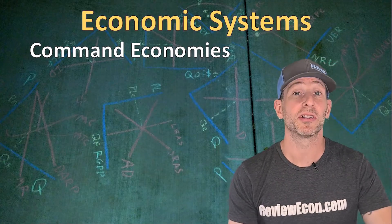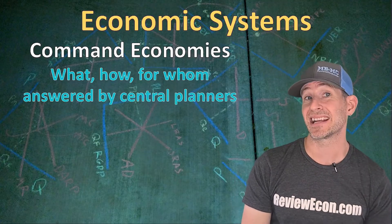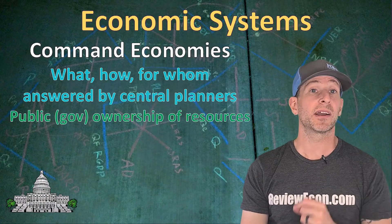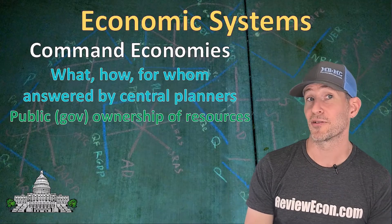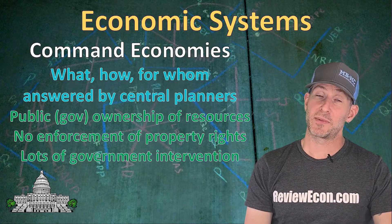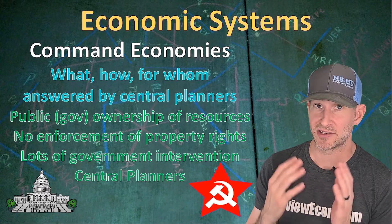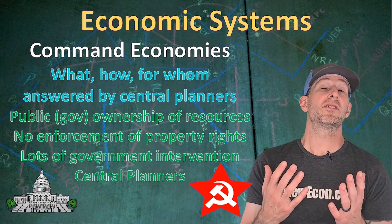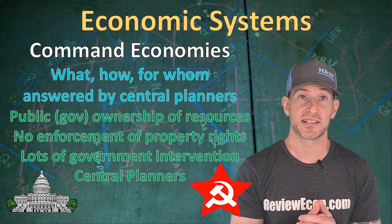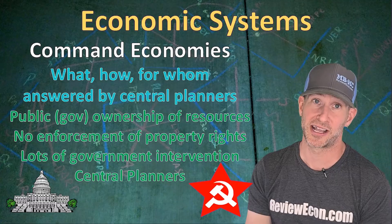The third pure economic system is called a command economy. In a command economy, what gets made, how it gets made, and who gets what is determined by central planners — government officials driving the economy. In a command economy, we have public or government ownership of resources, no enforcement of private property rights, and lots of government intervention. The former Soviet Union was a command economy. Even in the United States, we have some aspects of a command economy: public schools, roads, and regulations from the Environmental Protection Agency and the Food and Drug Administration are aspects of the command economy within the US free enterprise system.